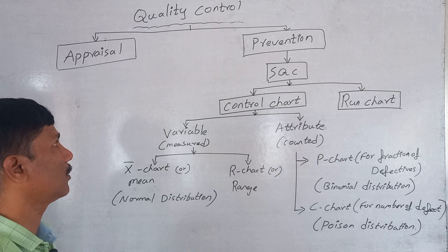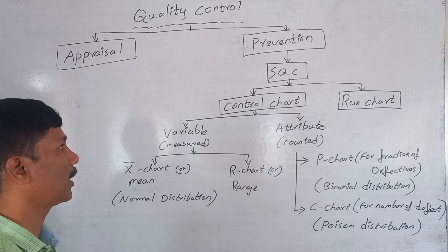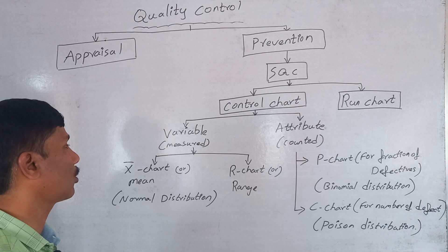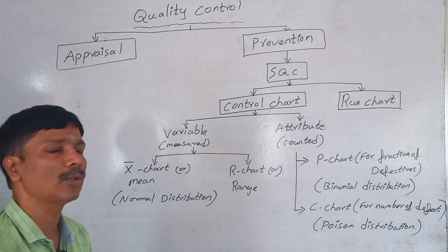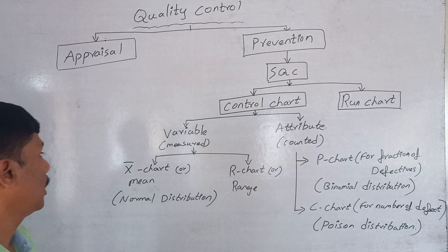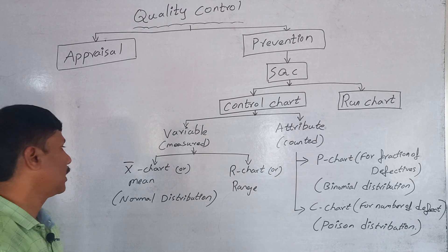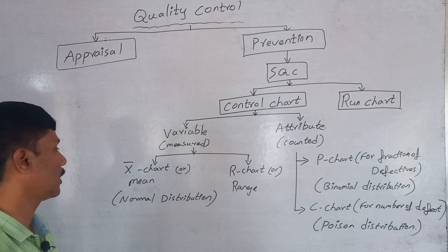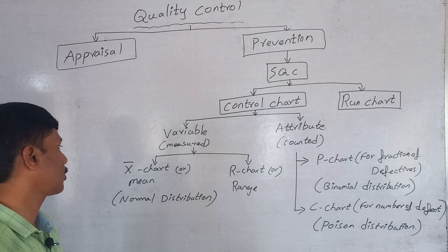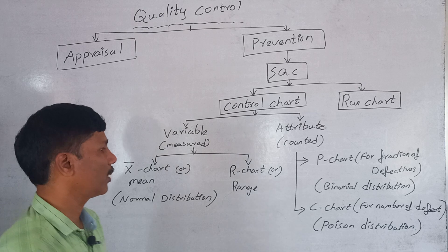You can use SQC — Statistical Quality Control — as a run chart. You can use a control chart as a run chart. You can use variable attributes, the X-bar chart as a mean chart, the R chart as a range chart, and normal distribution.